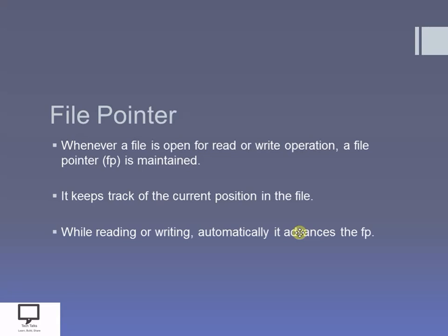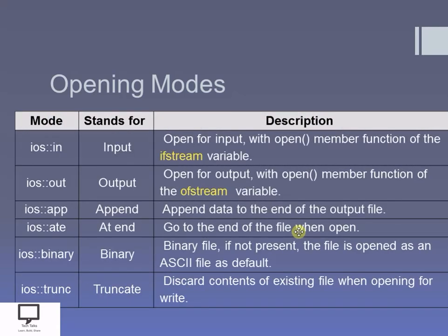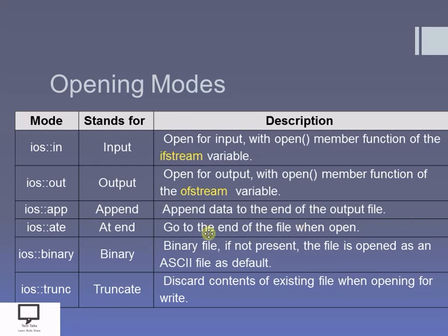With the help of the file pointer, we can open a file in different opening modes. Now the modes of opening a file where we can perform different types of operations: the first mode is the 'in' mode, where I use the in mode whenever I want to perform a read operation. The syntax is ios::in. It stands for input mode, which is used while reading the file.